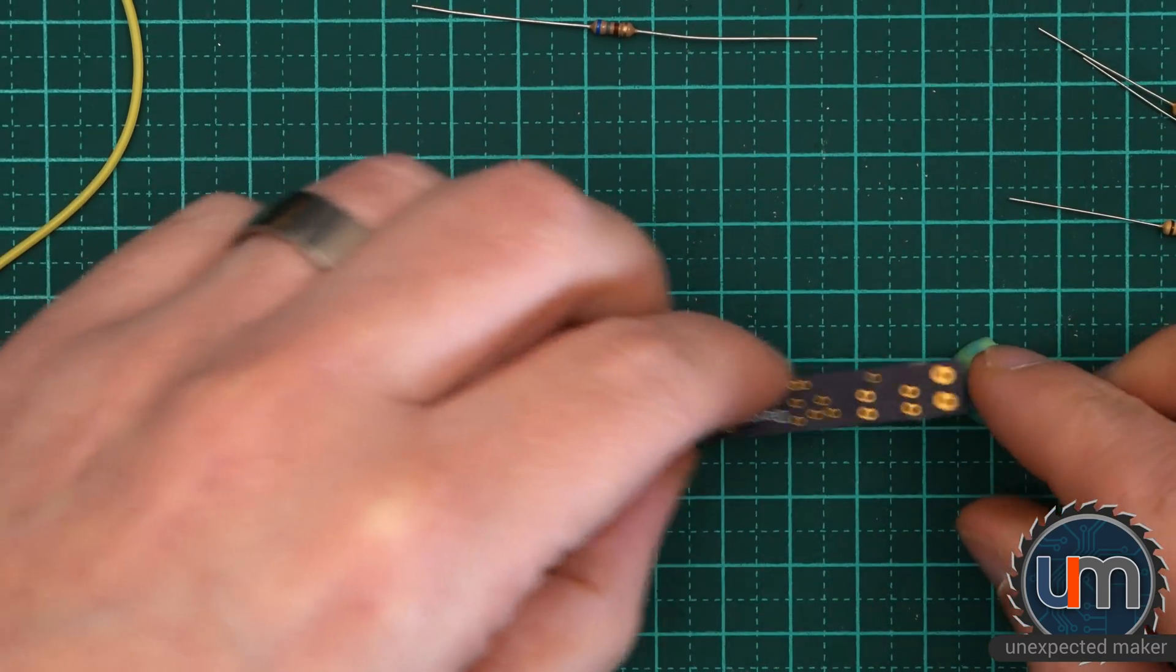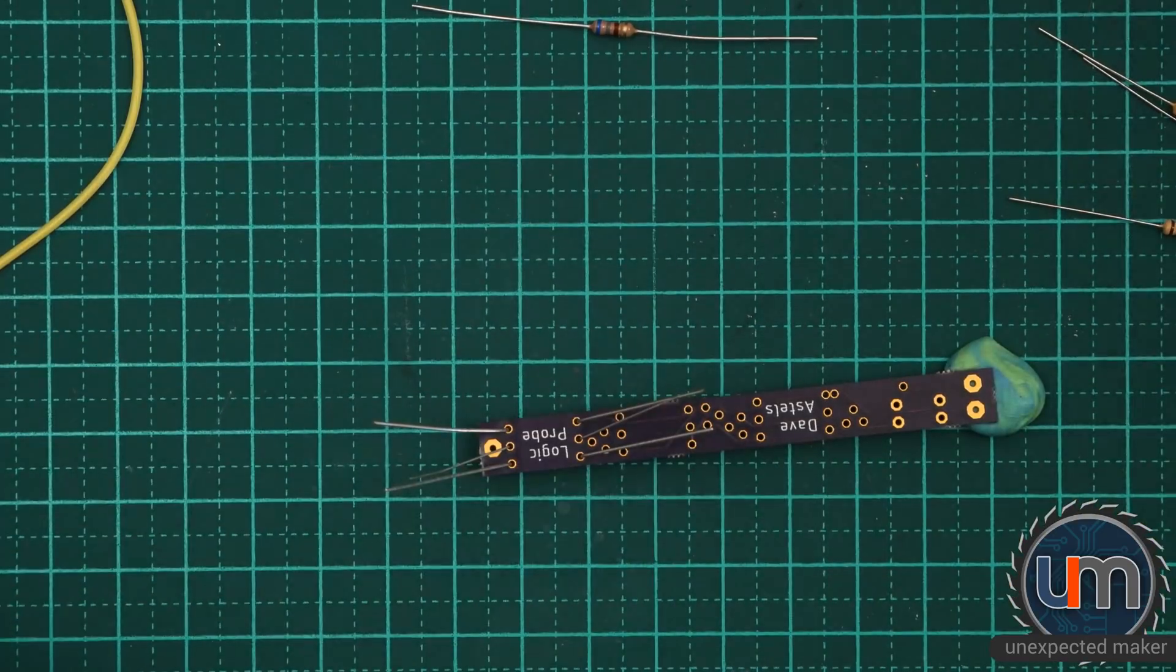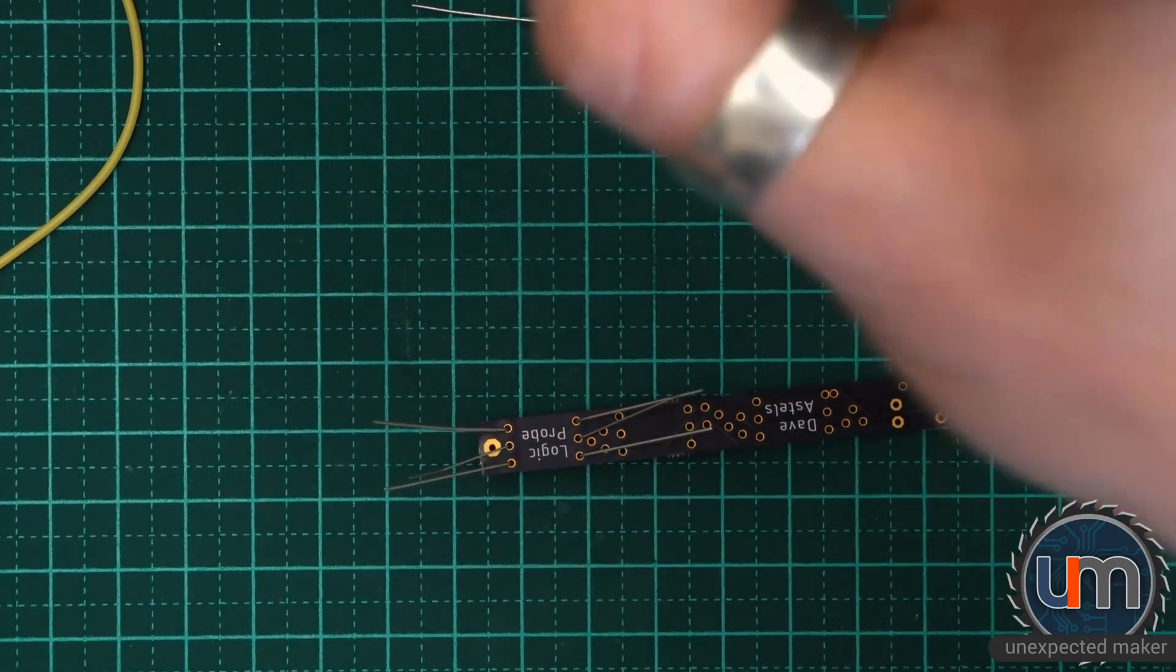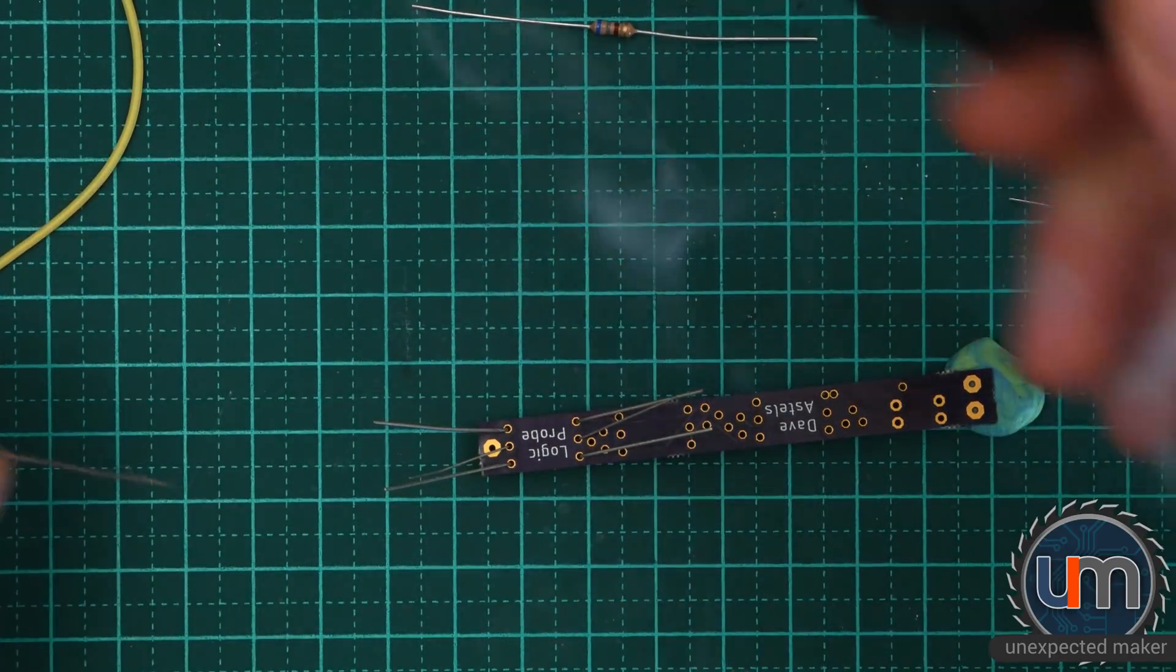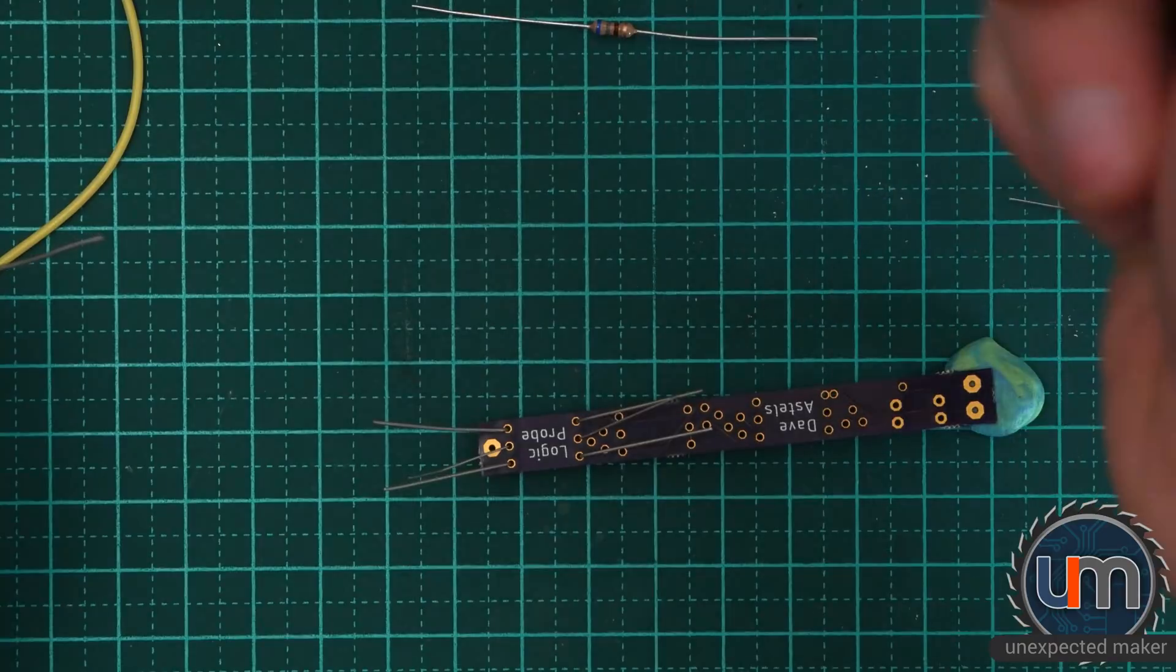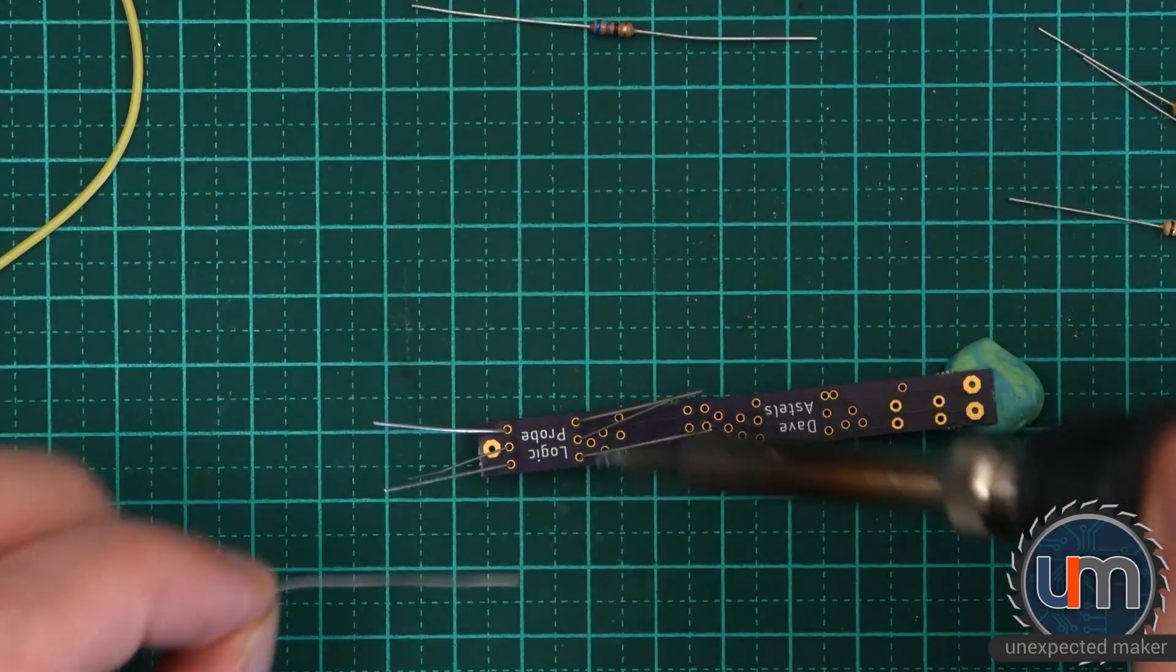Just going to put a bit of blue tack down. Get my iron. Give it a bit of a clean. Give it a bit of a tin. Smokey smokey. Don't breathe it. I think this tip's on its way out.